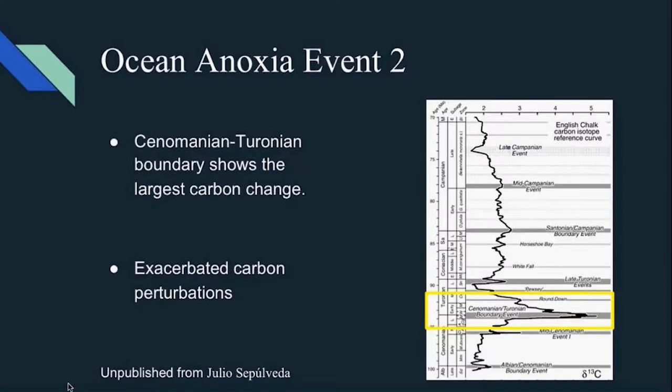Now on the figure to the right, I have an image of the carbon excursions during this time period. I have illustrated at the very bottom of it in a yellow box a very dramatic change in carbon. This is going around the Cenomanian and Turonian boundary, which is an extinction event. The whole process takes over the second interval of the time period. And as you can also see, lots of carbon in the atmosphere and the ocean, which is kind of interesting.